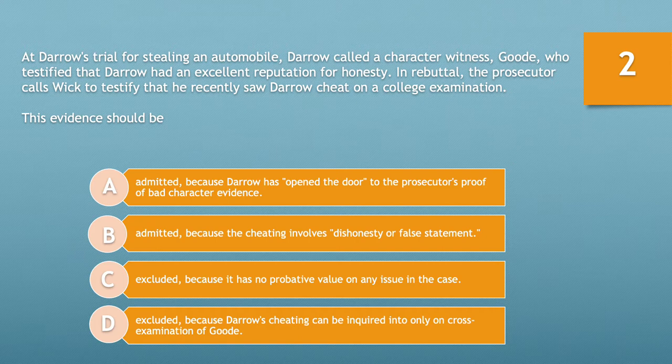Question number two. At Darrow's trial for stealing an automobile, Darrow called the character witness Good, who testified that Darrow had an excellent reputation for honesty. In rebuttal, the prosecutor calls Wick to testify that he recently saw Darrow cheat on a college examination.